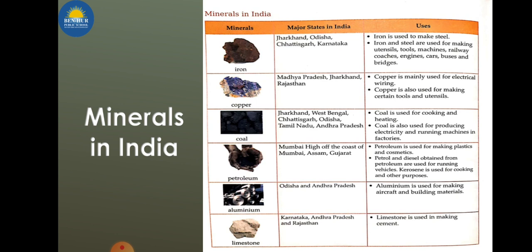Copper is found in Madhya Pradesh, Rajasthan, and Jharkhand, and it is used for making tools, utensils, and electric wiring like copper wires. Aluminium is found in Odisha and Andhra Pradesh, and it is used for making aircraft and building materials. Go through the table to see which states these minerals are found in and what their uses are.